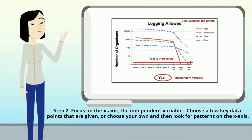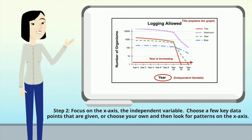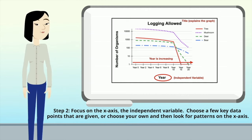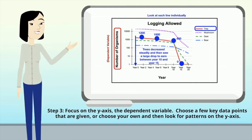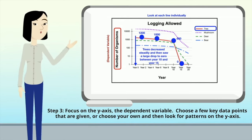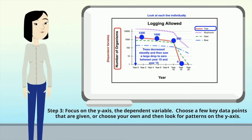In step two, we focus on the x-axis, the independent variable. In this case it's year, and we can see that the year is just increasing. In step three, we focus on the y-axis, the dependent variable. We choose key data points and look for patterns on the y-axis. However, we're going to look at each line individually.